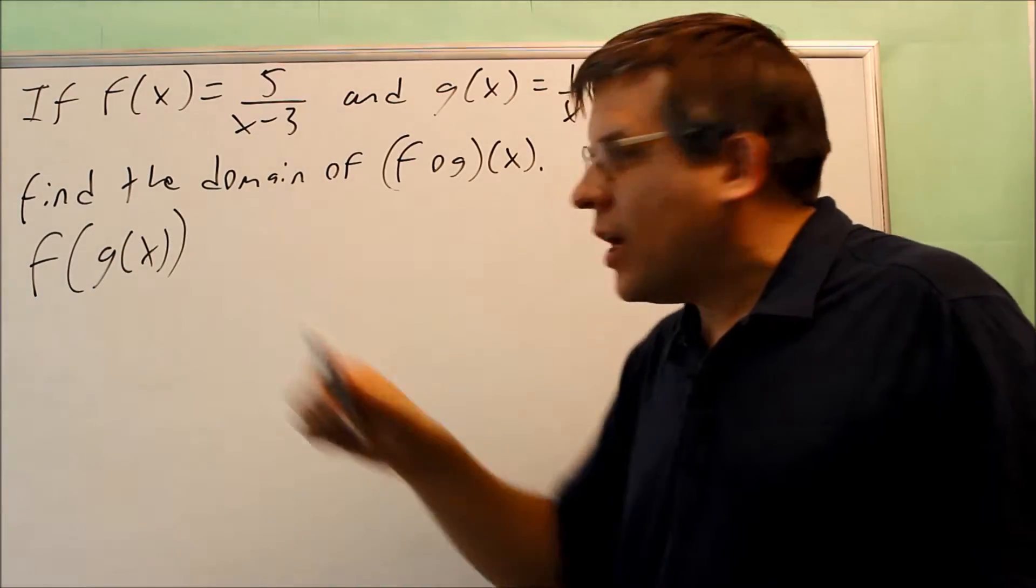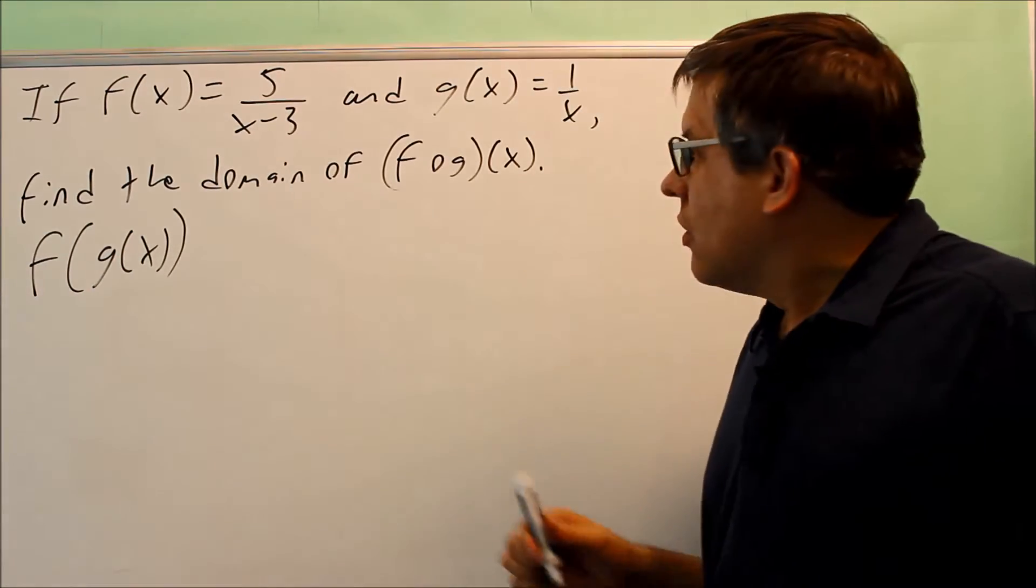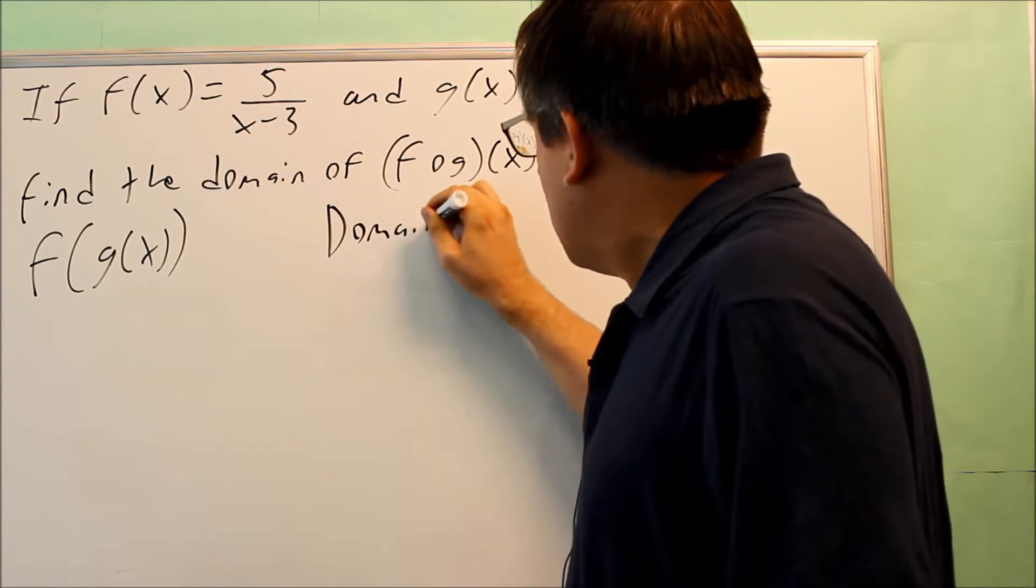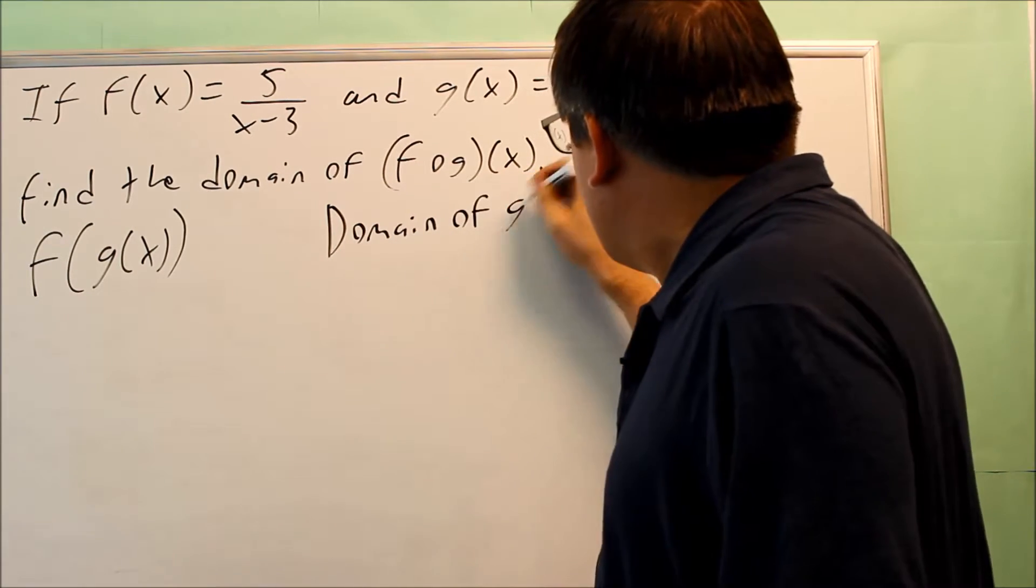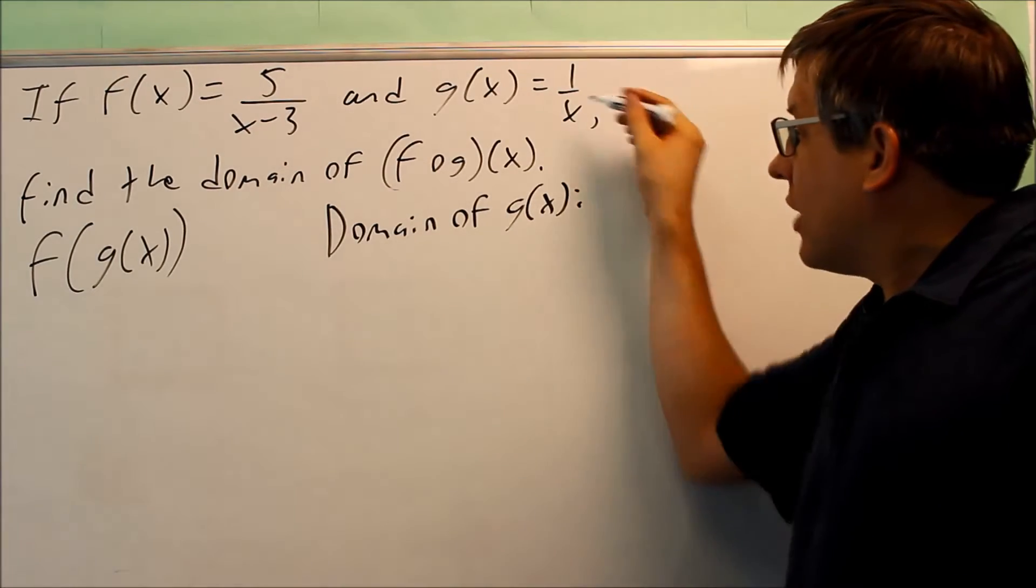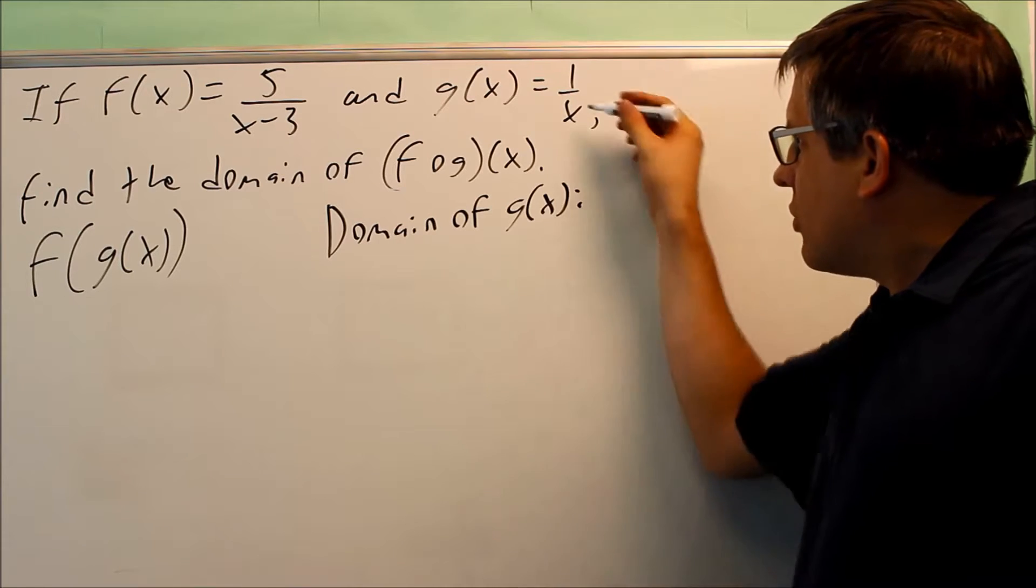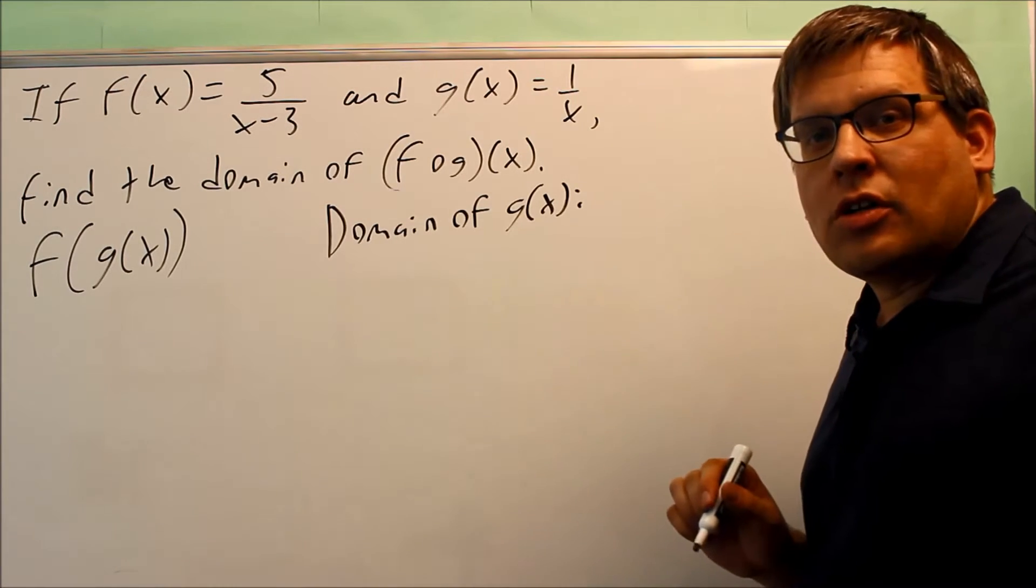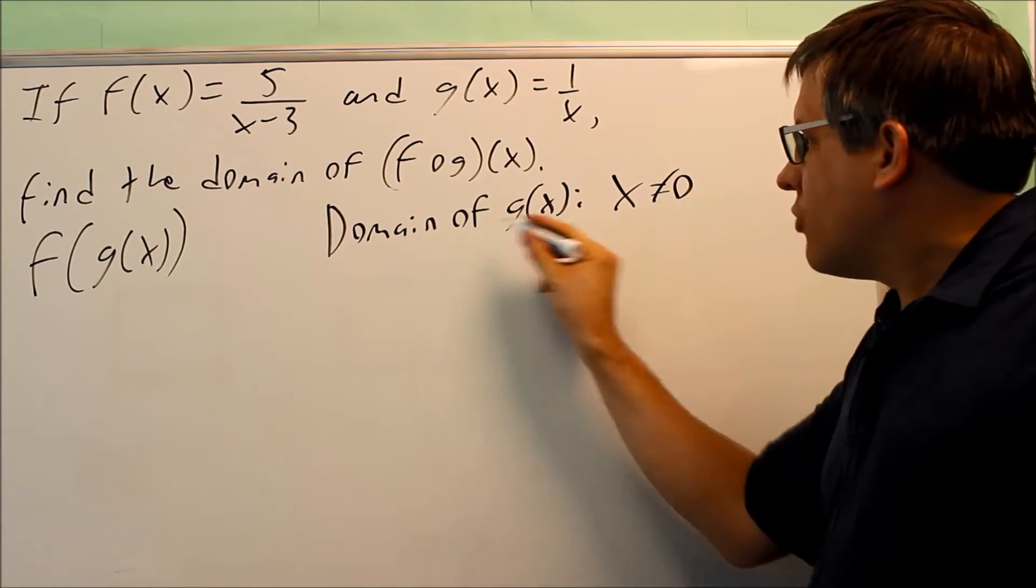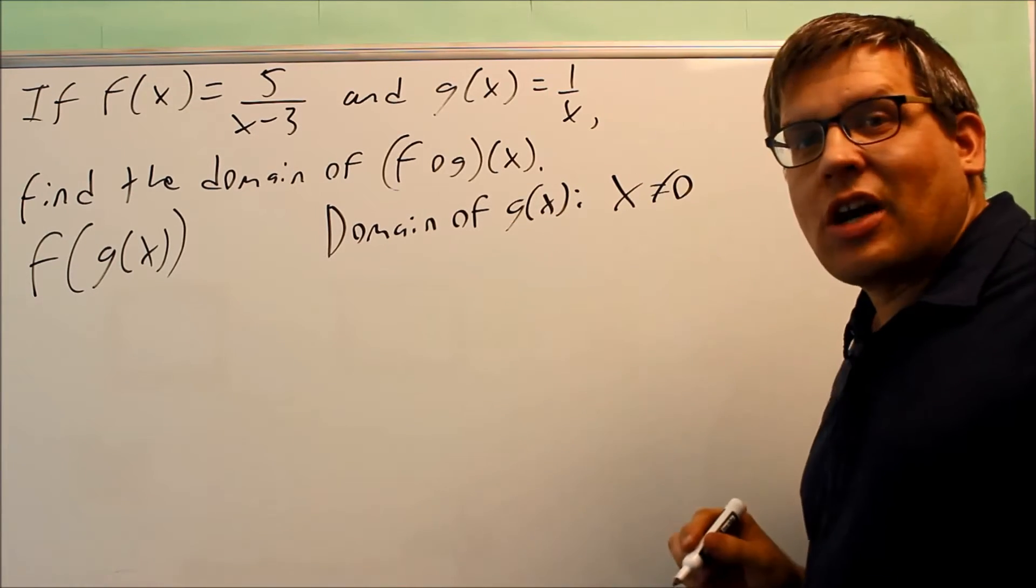So first, I want to find the domain of g of x. That's this right here. I have 1 over x. I'm not allowed to put a 0 into the bottom because otherwise it's going to be undefined. So therefore, what I would write is this: Domain of g of x is x is not equal to 0.